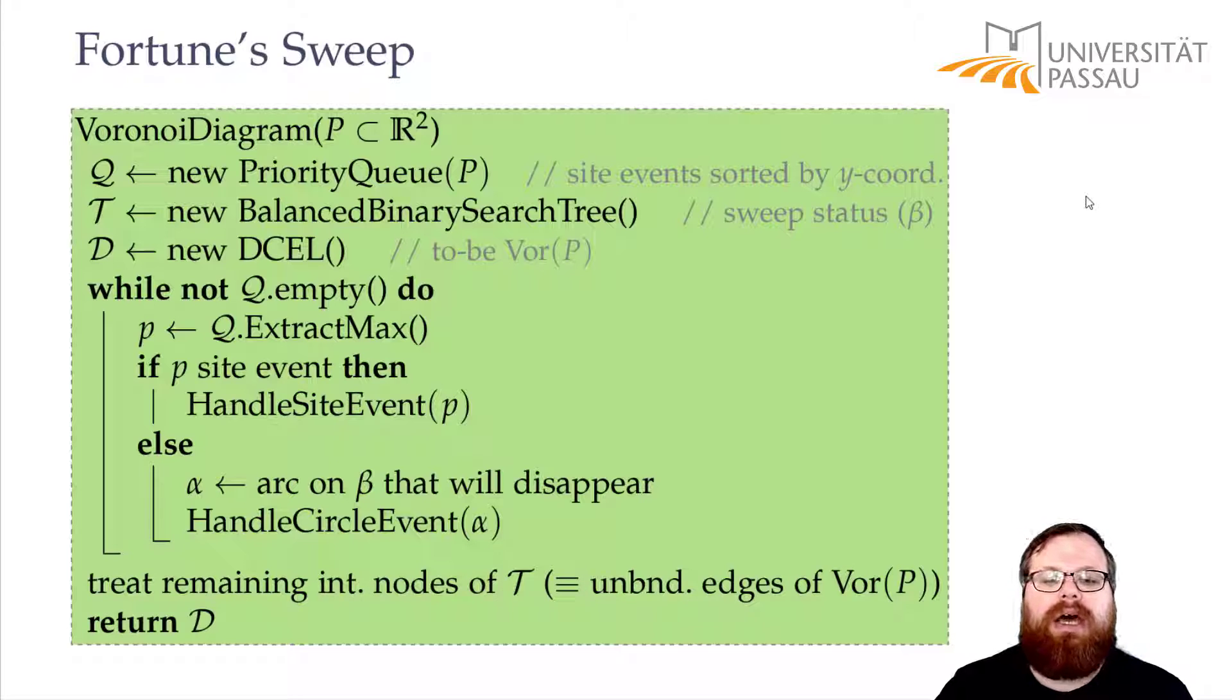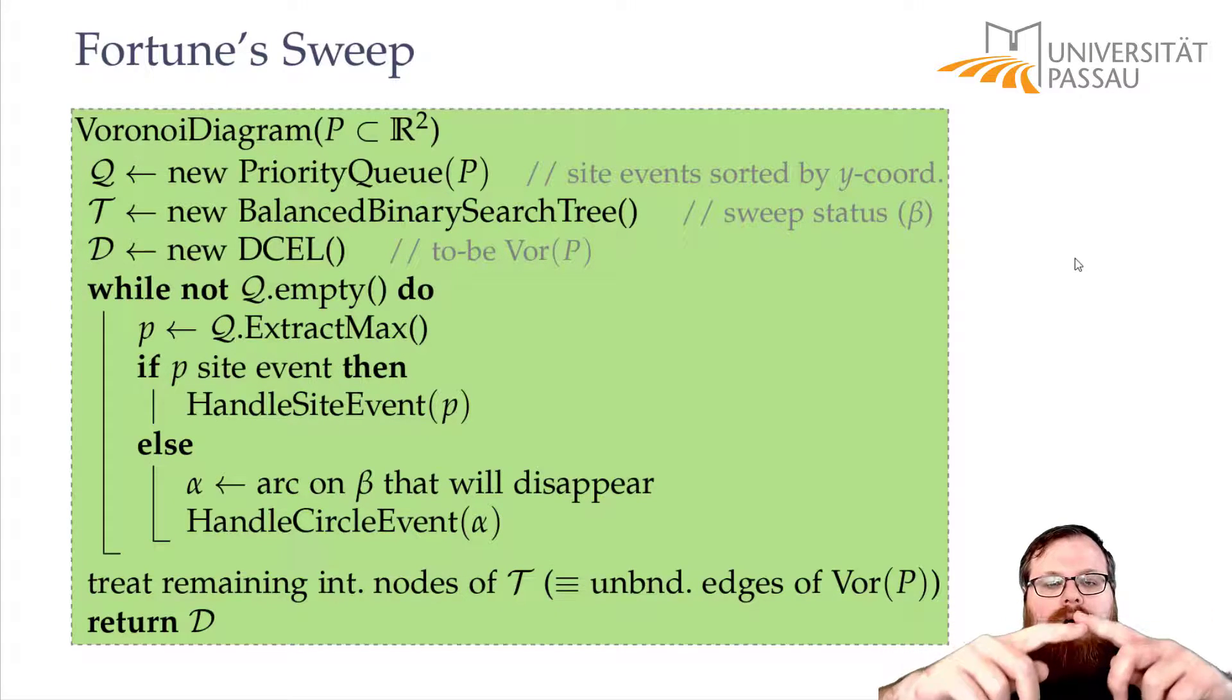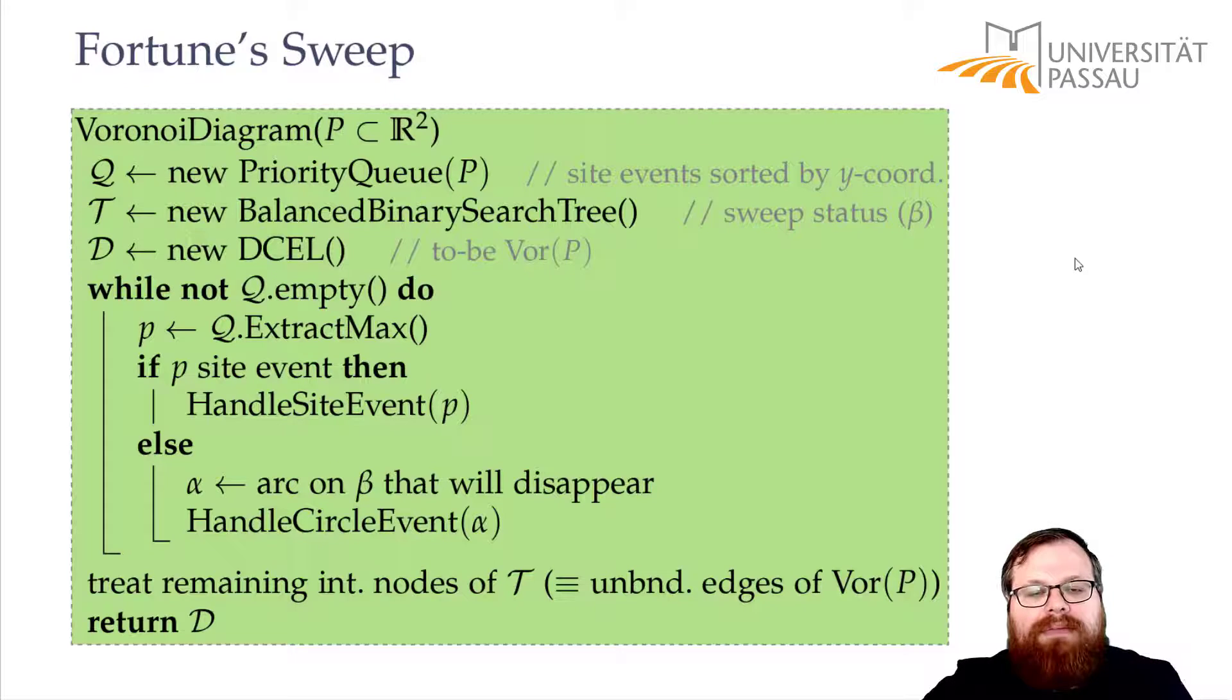And in the very end, all the remaining nodes are unbounded edges and we return the data structure. So everything that's still in our balanced binary search tree, all the parabolas that are still part of the beachline, they will just continue on and they will give us unbounded edges that go downwards to infinity.